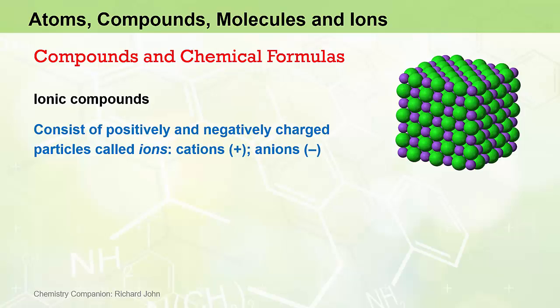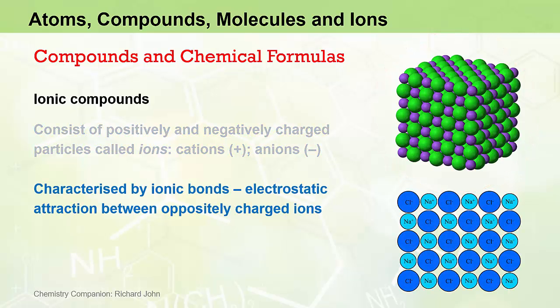These cations and anions are arranged in a solid three-dimensional semi-infinite lattice of alternating positive and negative charges. Ionic compounds are characterized by ionic bonds, which are electrostatic attractions that result from particles of opposite charge. We deal with ionic bonds in the formation of ions in following videos.